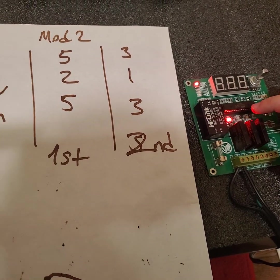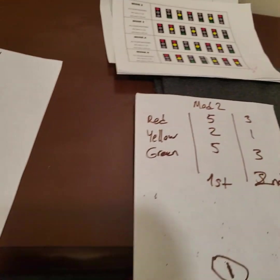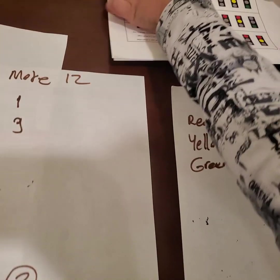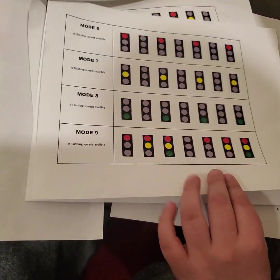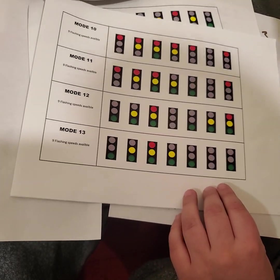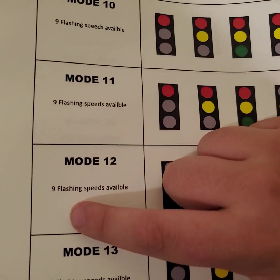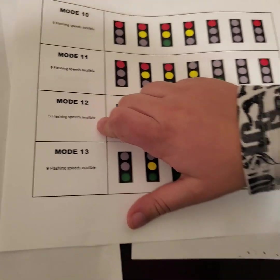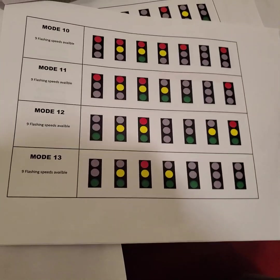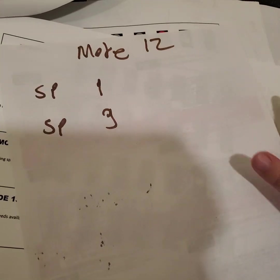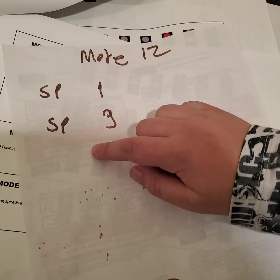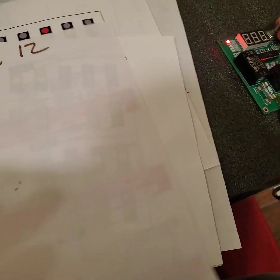Now I want to show you mode 12. Some of the modes are different from the others. Mode 12 has 9 flashing speeds available. To show the speed, we're going to first do speed 1, then do speed 9 to test the difference.